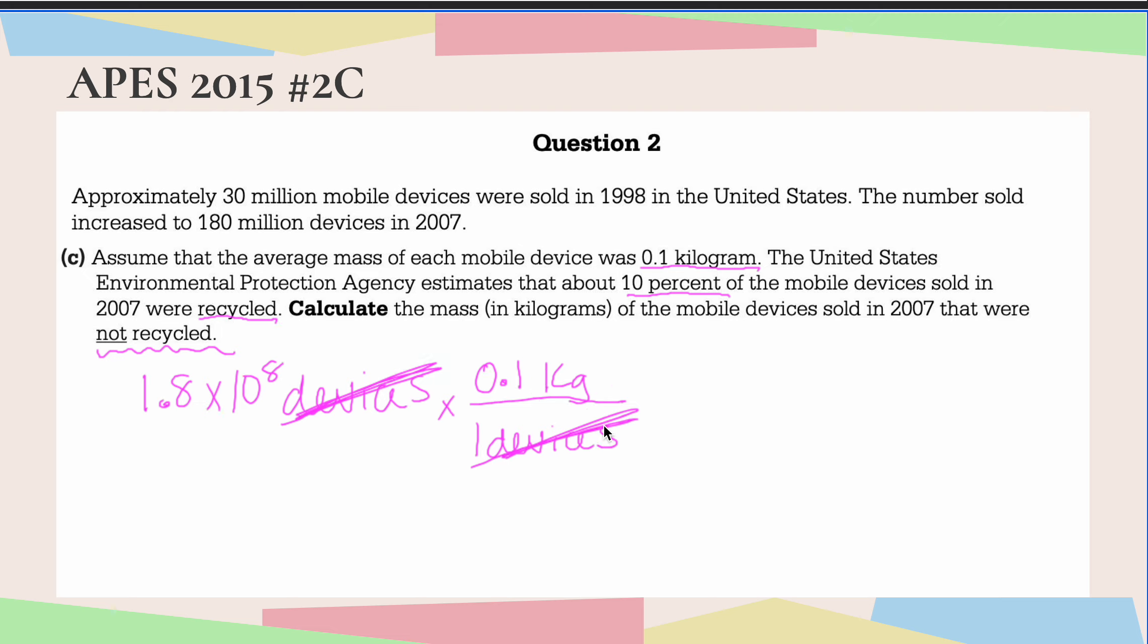However, at this point, I don't have the percentage that were not recycled. So if 10% were recycled, the percentage that were not recycled would be 90%. So now I'm going to take all of this and multiply it by 90%, which is the same as 0.90.